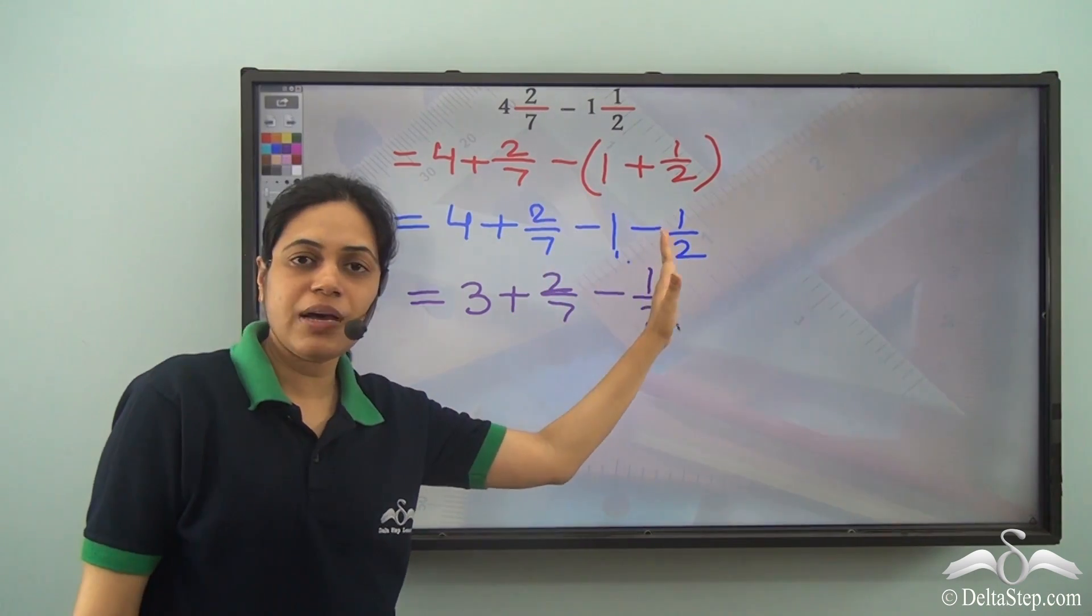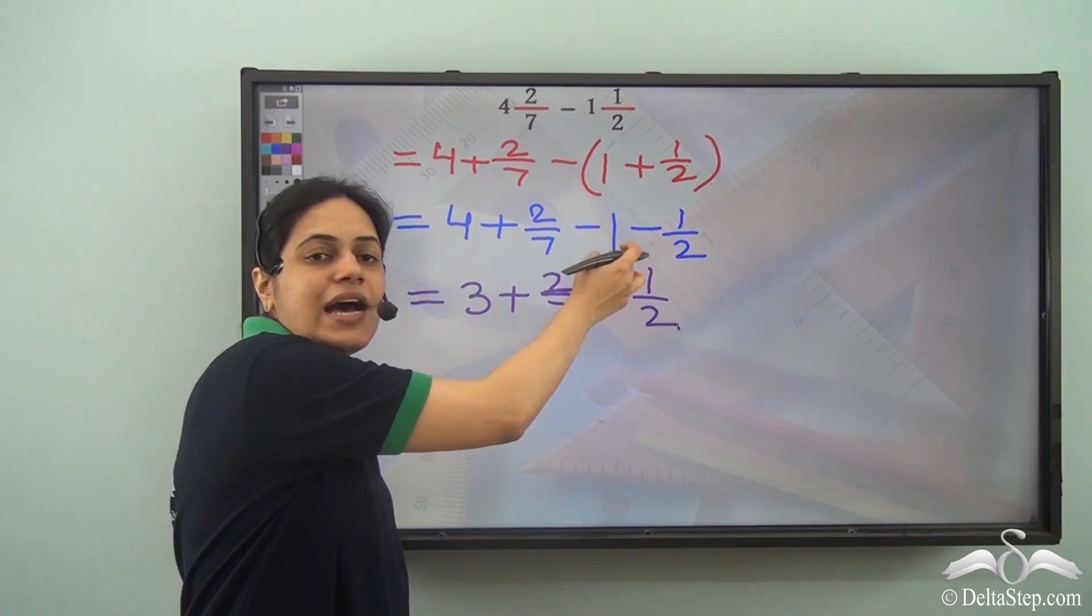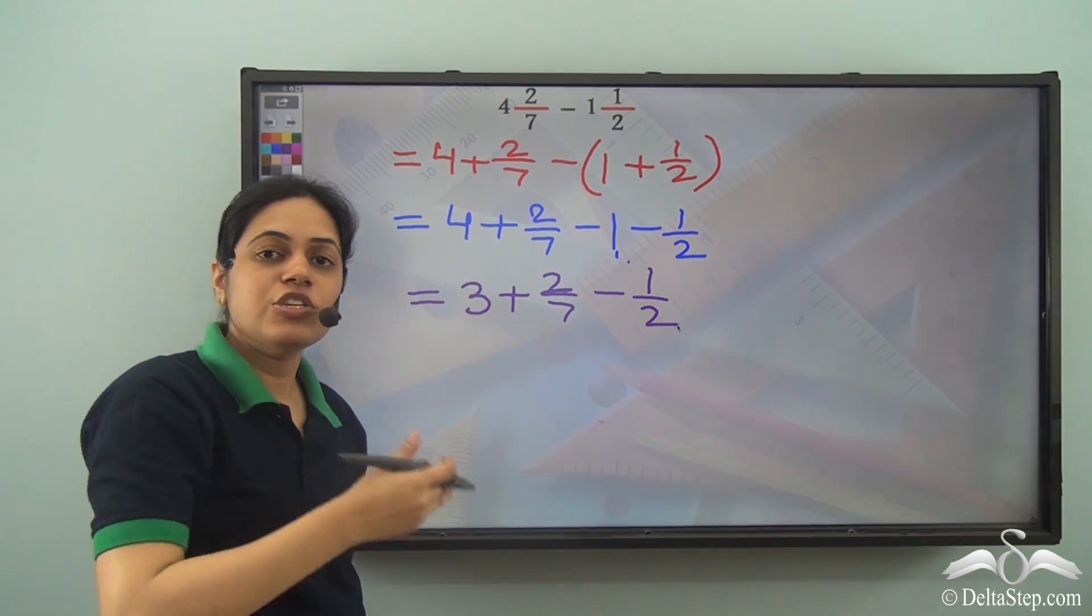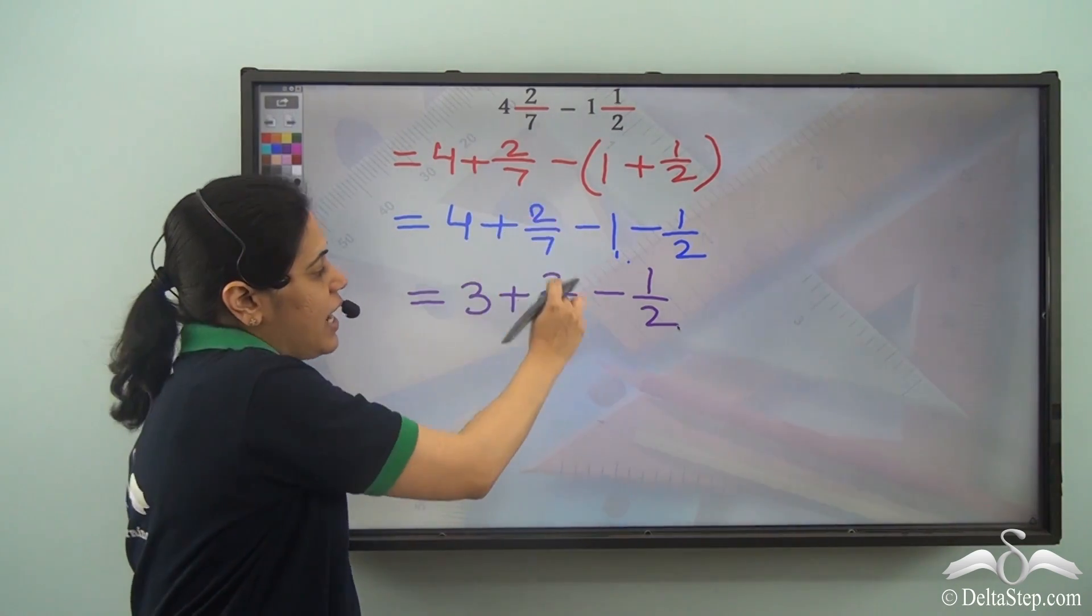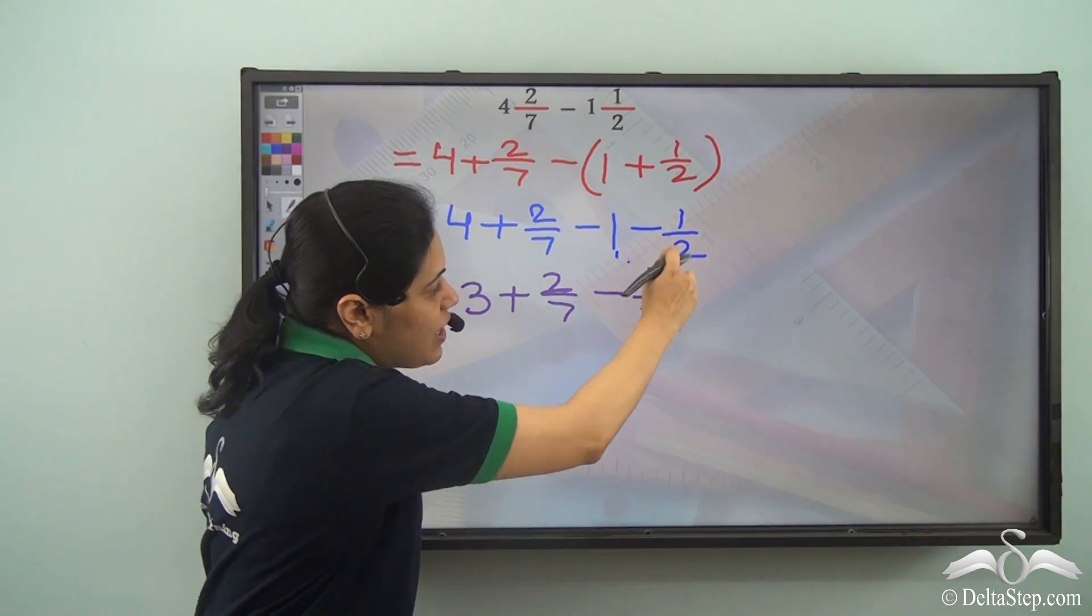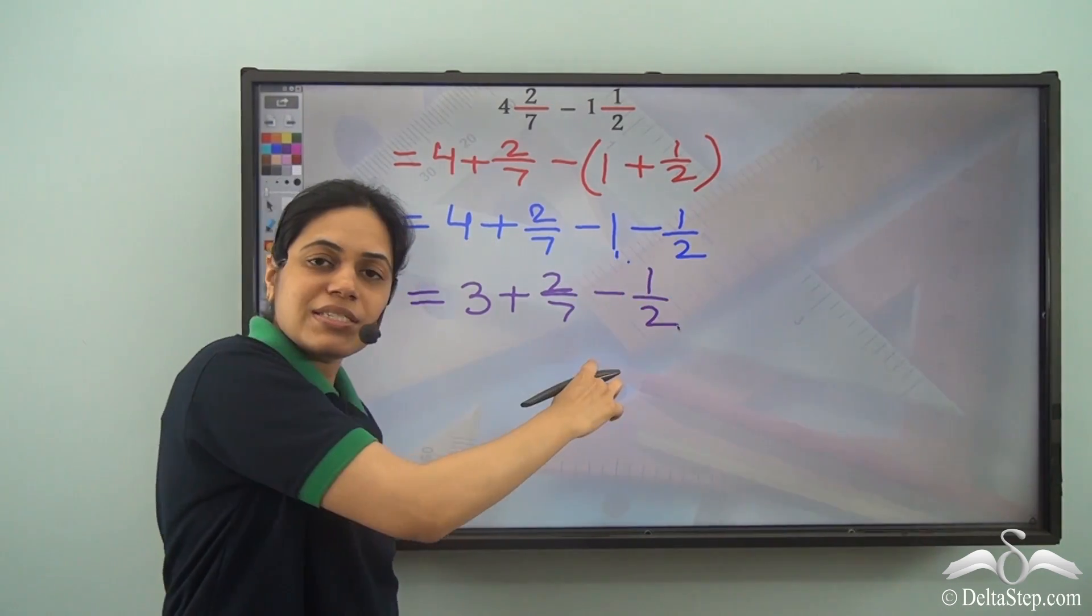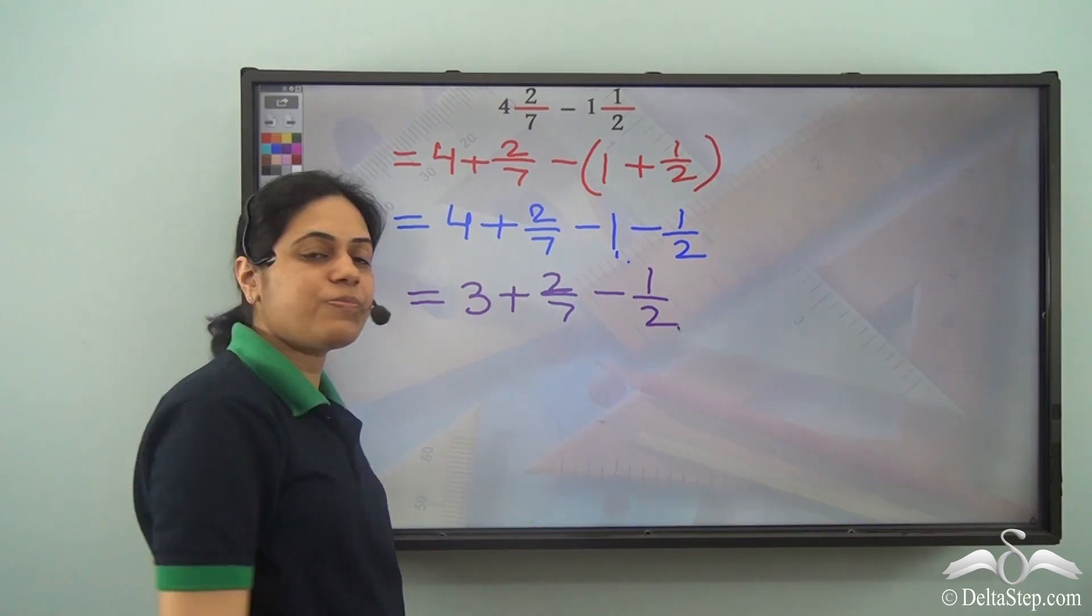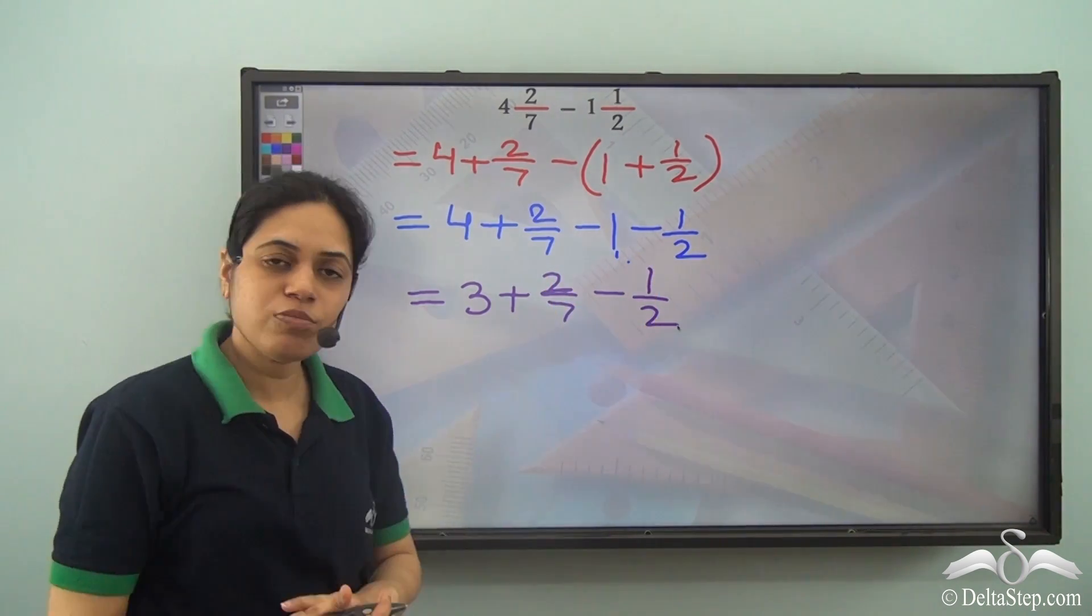We consider the sign before the number. So 4 and 1 has a minus sign before this, so I need to subtract 1. So I need to subtract 1 by 2 from 2 by 7.